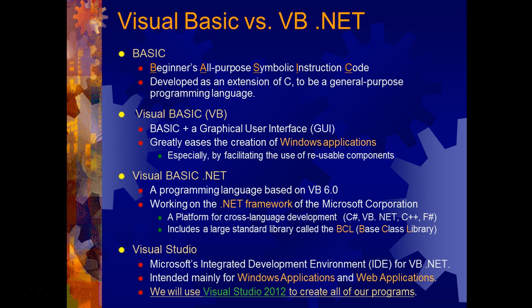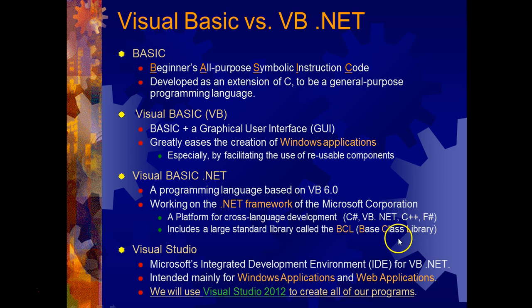The .NET Framework is a platform for cross-language development. That means you can do certain things in Visual Basic.NET, and also similar things in C#, C++, and F#. These are just different programming languages from Microsoft. It also includes a large standard library called the Base Class Library, or BCL.